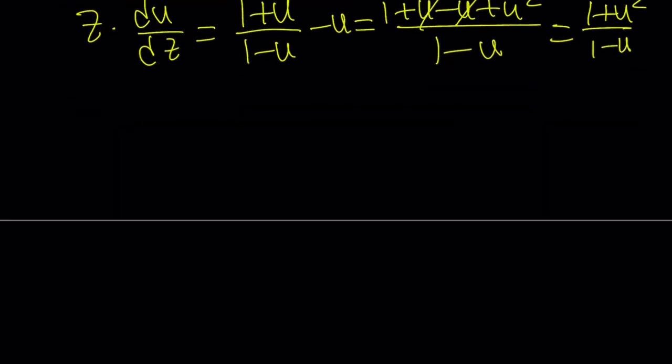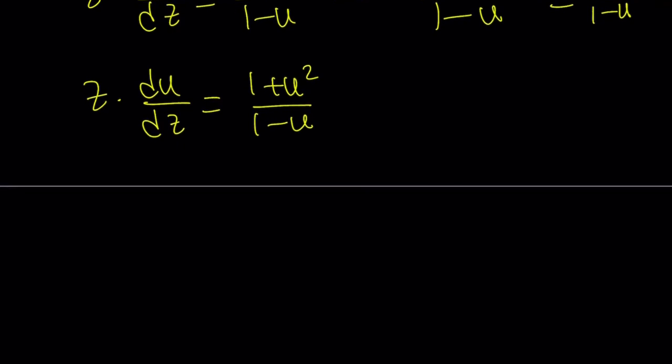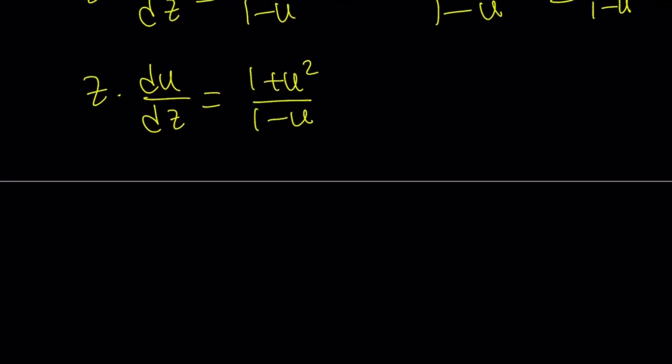So, let me rewrite it. And guess what? This becomes a separable differential equation. Yay! All these transformations and substitutions make it a separable equation. Now, let's go ahead and put the z's on one side, and then u's on the other side. Or you can do it the other way around. It doesn't really matter. No big deal. I guess we can put the u's on the left-hand side since du's already there.